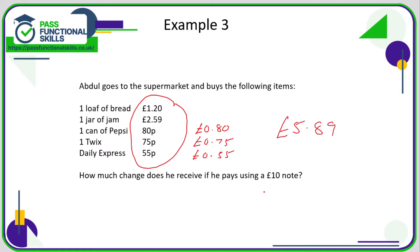So how much change does he receive? It's going to be £10 minus £5.89. I'd just type that into a calculator. £10 minus £5.89 means he receives £4.11 change.